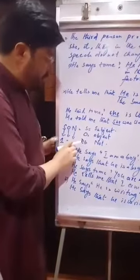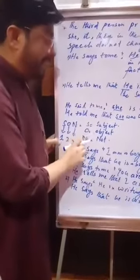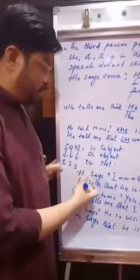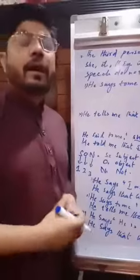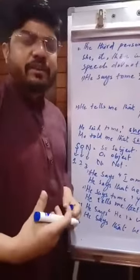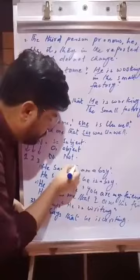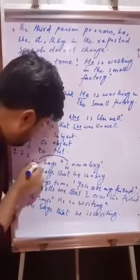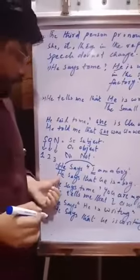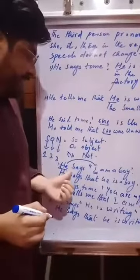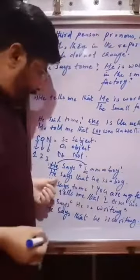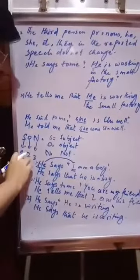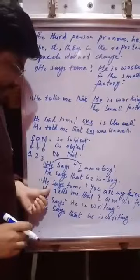If the first person pronoun is present in the reported speech, then it should be changed according to the subject of the reporting speech. For example, 'I' is a first person pronoun and it should be changed according to the subject of the reporting speech. 'He says I am a boy' becomes 'He says that he is a boy.' So we apply the SON formula here.